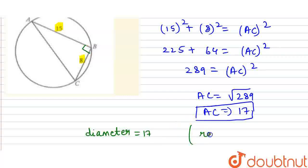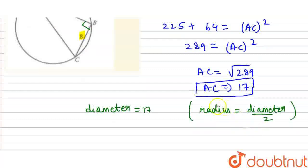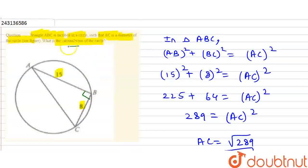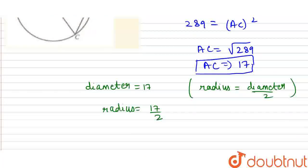We know that radius equals diameter divided by 2. If diameter is 17, then radius equals 17/2. Now we have to find the circumference of the circle.